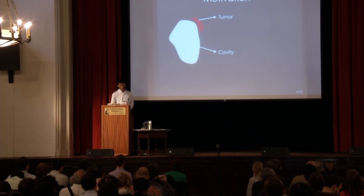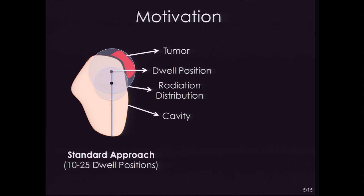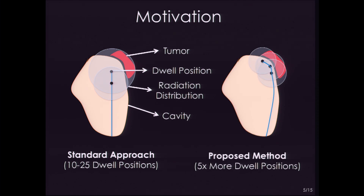Let's say that we have a tumor and some cavity. The traditional applicators that are available are kind of linear, which provide few dwell positions and are farther from the tumor, which results in a high dose distribution to the healthy organs. The motivation of our work is to have this dose distributed over a larger number of dwell positions that are closer to the tumor, and hence lower side effects.